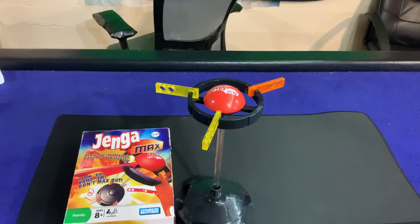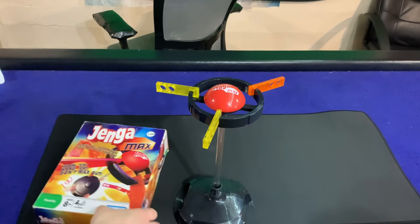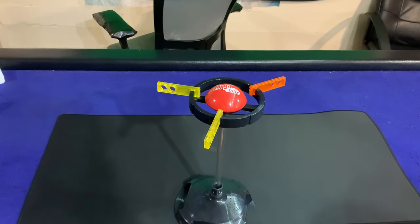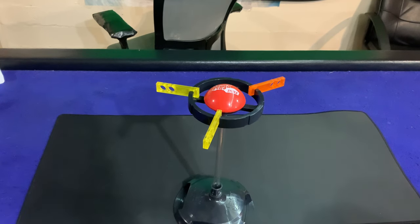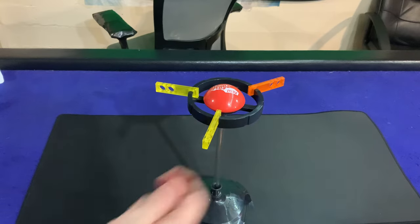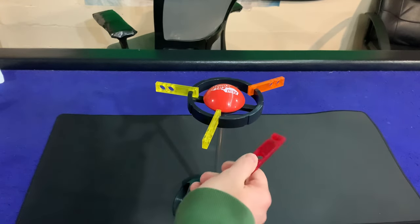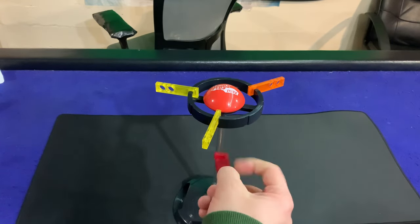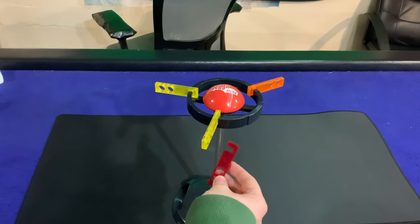This is for ages 8 plus for 2 plus players. Hook them, hang them, don't max out. This is a really simple game, boys, and I'll teach you the rules right now and play a full game. So how it works is on your turn, you're going to grab one of these pieces right here and then you're going to connect it to any one of the circles out here.